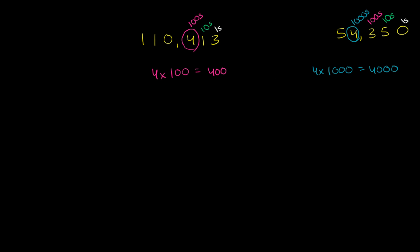So we could write a sentence: the value of the four in this number is one tenth the value of the four in this number. I know it's a little bit weird sentence. The value of the four in 110,413 is one tenth the value of the four in 54,350.